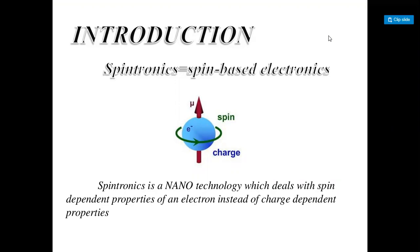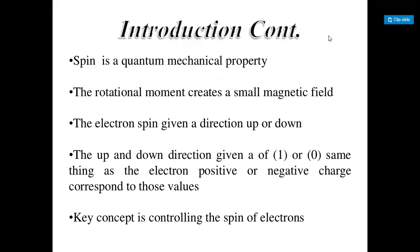Spintronics is a spin-based electron technology. As you can see in the diagram, the spin should change from the electron. It is revolving parallel and anti-parallel, in which both the spin and charge should change. Spintronics is a nanotechnology which deals with the spin-dependent properties of an electron instead of charge-dependent property, and it involves quantum mechanical properties.